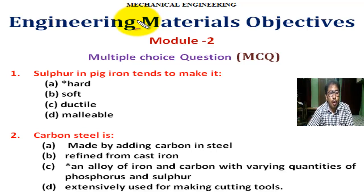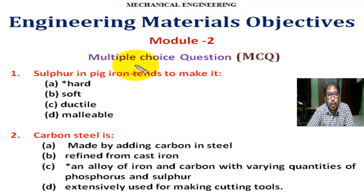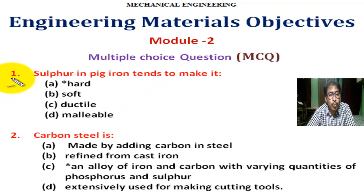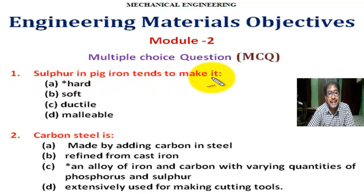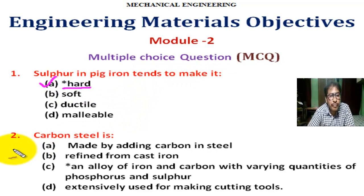Hello students. We have started some multiple choice questions (MCQ) with answers on engineering materials under mechanical engineering module. It is very important for competitive exams. Question number one: sulfur in pig iron tends to make it — correct answer is A — sulfur in pig iron tends to make it hard.